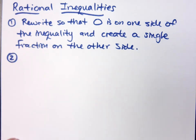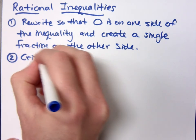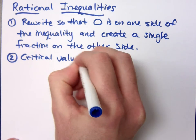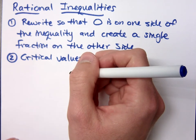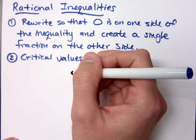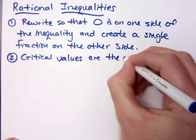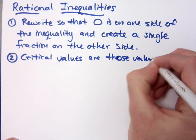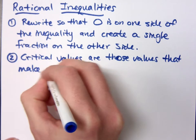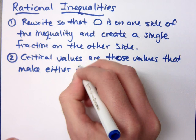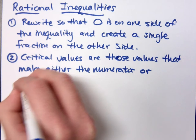Once you have a single fraction and zero on the other side, this is how you find the critical values. We called them gatekeepers, because zero is the main gatekeeper that keeps order between negatives and positives. The critical values are those values that make either the numerator or denominator equal to zero.